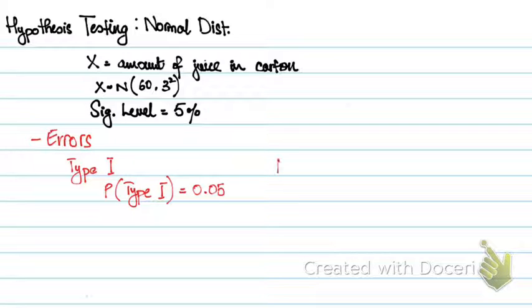The other type of error is called Type II error. Type II error is basically saying that you accept the null hypothesis when the null hypothesis is not true. That is, in this case, saying that the μ, the mean, is 60 milliliters when it is not 60 milliliters. So how do you find the probability of a Type II error?